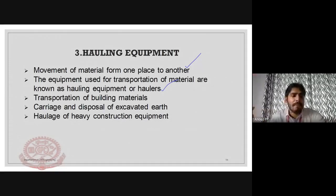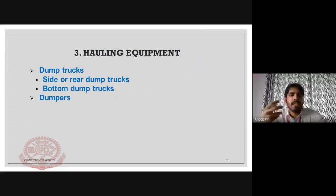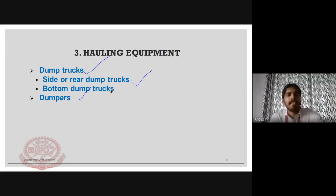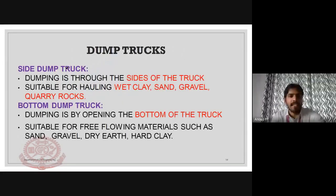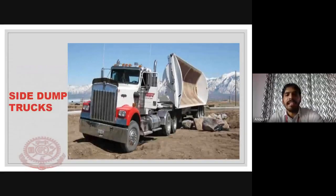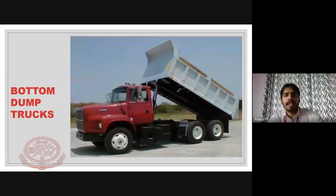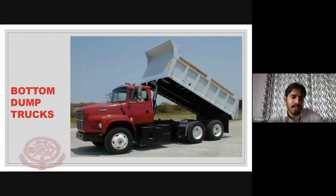Normally we are using dump trucks and dumpers for hauling. Dump trucks can be categorized into two types: side dump trucks and bottom dump trucks. In side dump trucks, dumping is to the side of the truck. In bottom dump trucks, dumping is by opening at the bottom of the truck.